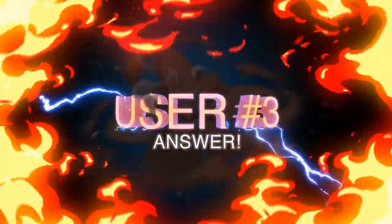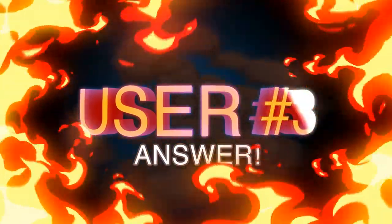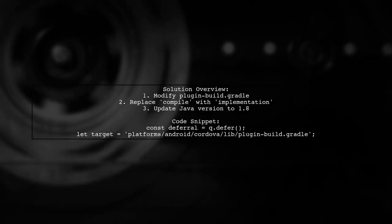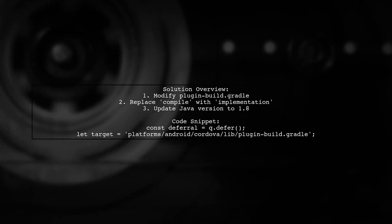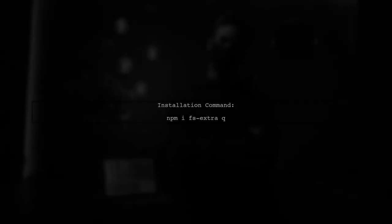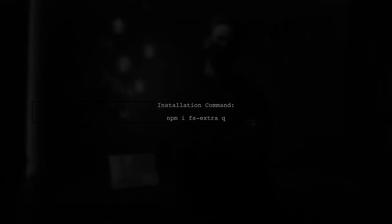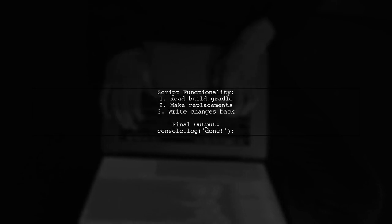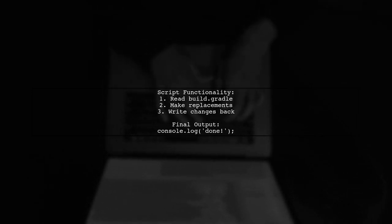Let's now look at another user-suggested answer. To fix the Cordova build error, you can use a script that modifies the plugin build.gradle file. This involves replacing deprecated configurations and updating Java version variables. First, install the required packages using npm — run npm ifs-extra-q to get started. The script reads the build.gradle file, makes necessary replacements, and writes the changes back. This should resolve the path error during the build process.